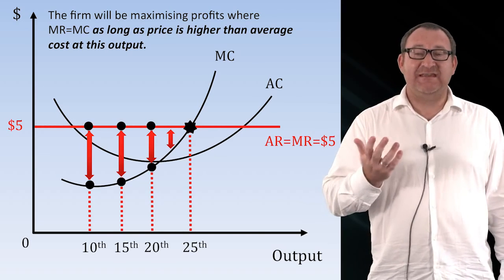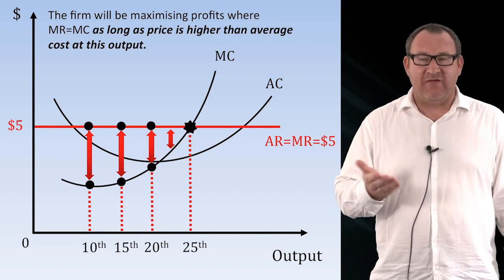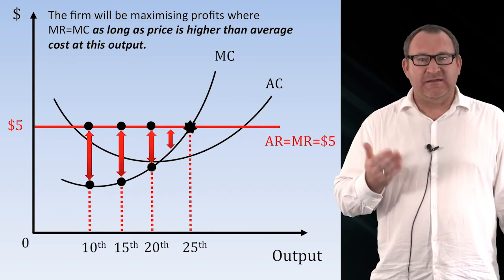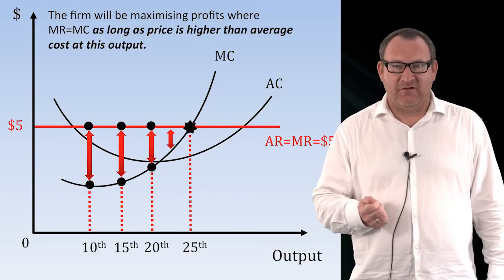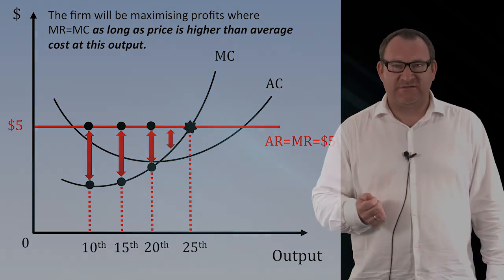We can see on the graph that the optimal output is at 25 kilos of tomatoes, where marginal revenue equals marginal cost.